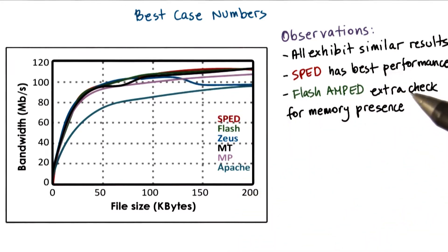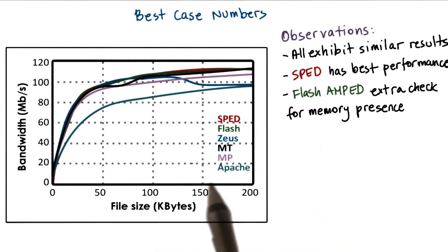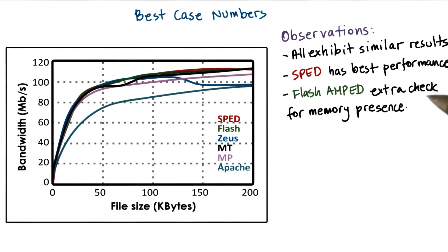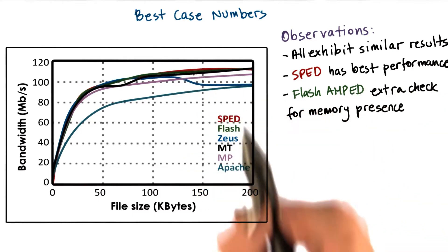Flash is similar, but it performs that extra check for the memory presence. In this case, because this is the single file trace, so every single one of the requests is for the single file. There's no need for blocking I/O, so none of the helper processes will be invoked. But nonetheless, this check is performed, so that's why we see a little bit lower performance for Flash.